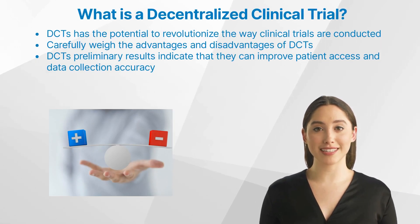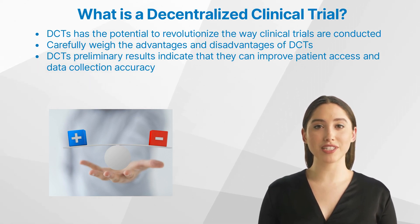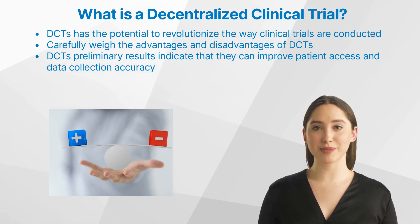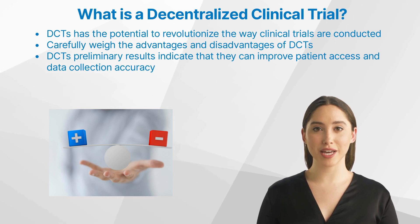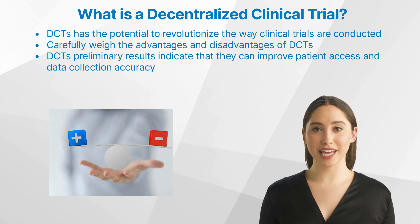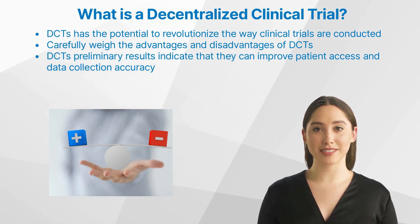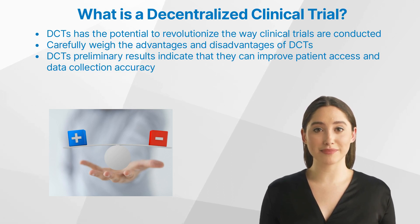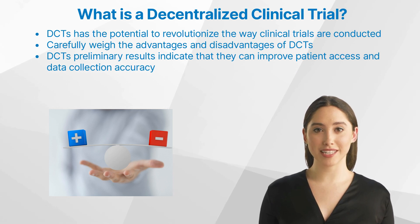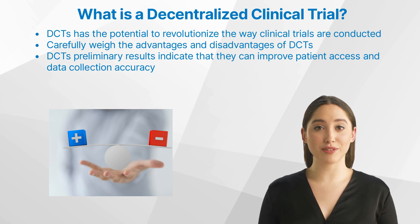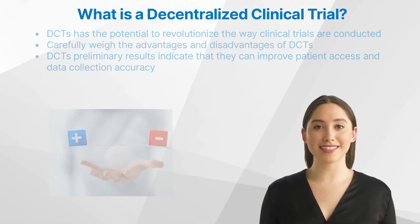To summarize, the use of decentralized clinical trials, or DCTs, has the potential to revolutionize the way clinical trials are conducted by providing patients with a more convenient and accessible option, while still providing researchers with accurate and valuable data. However, it is critical to carefully weigh the advantages and disadvantages and to ensure that adequate safeguards are in place to protect patient safety and confidentiality, as well as address data security concerns and technological challenges. Although decentralized clinical trials are a relatively new approach, preliminary results indicate that they can improve patient access and data collection accuracy. Researchers can ensure that DCTs are used safely and effectively by carefully weighing the benefits and drawbacks and implementing appropriate safeguards.